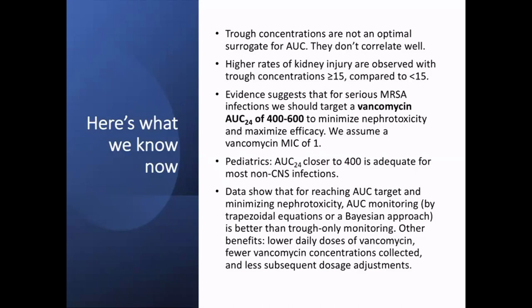It's also reasonable in pediatrics, although for most non-CNS infections an AUC 24 closer to 400 is probably adequate. The fifth point I want to emphasize is that for reaching the area under the curve target and thereby minimizing nephrotoxicity, AUC monitoring — by one of two approaches — is better than trough-only monitoring. The data support that compared to trough-only monitoring, measuring the AUC will help with less nephrotoxicity and will probably help with efficacy in some situations.